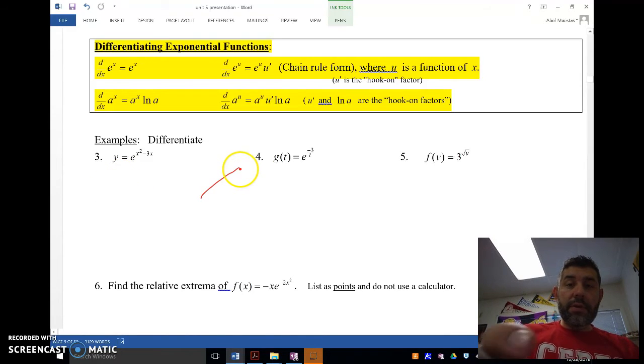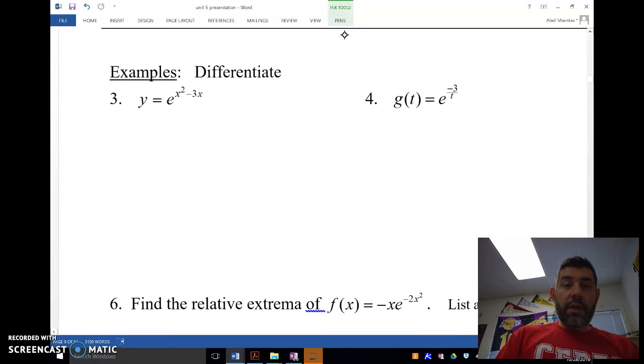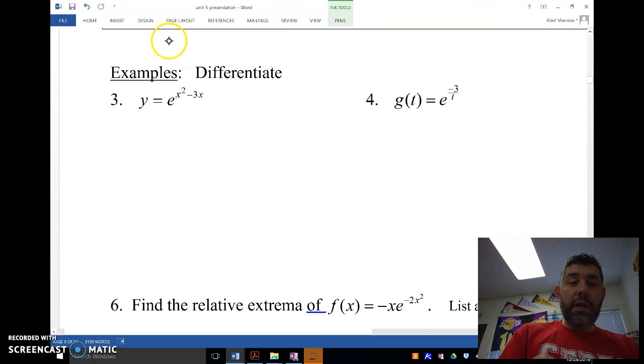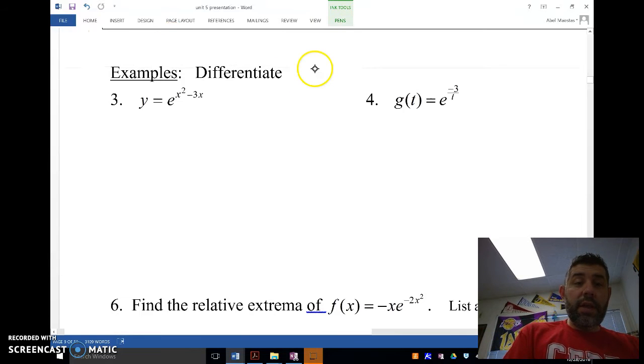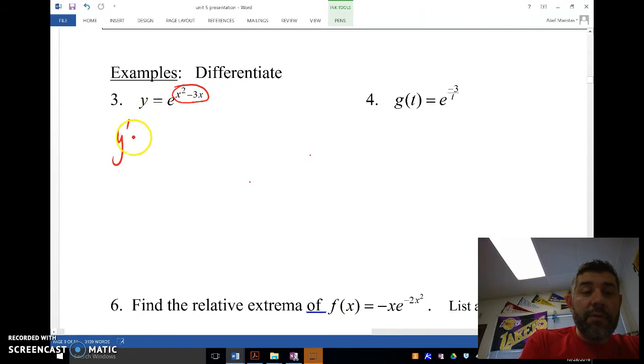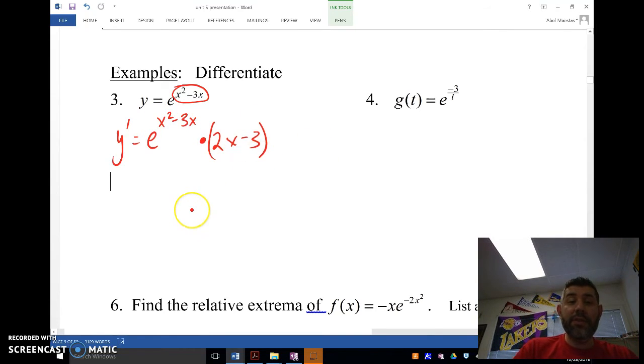Let me zoom in here for you. So let's take a look at a few of these. Y equals e to the x squared minus 3x. So again, the power here is where our chain rule happens. The derivative is going to be e to the x squared minus 3x times the derivative of whatever's in the power, so 2x minus 3. That's all there is to it.